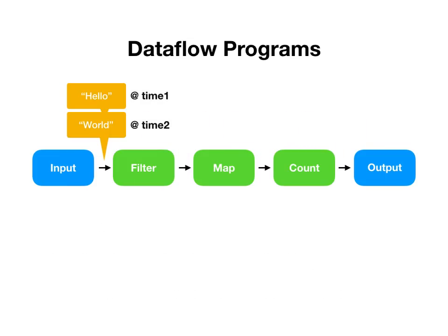Now in our world, all of these records are going to have timestamps — things like 'time one' and 'time two.' These could mean several different things: the time might be when the record was admitted into the system, or it might be a more semantically meaningful time that the person who created the data attached to it. The main point is that as records flow through the system they will maintain their timestamps moving forward.